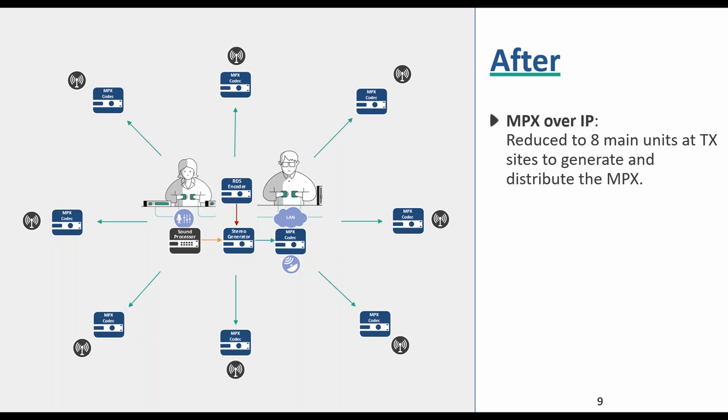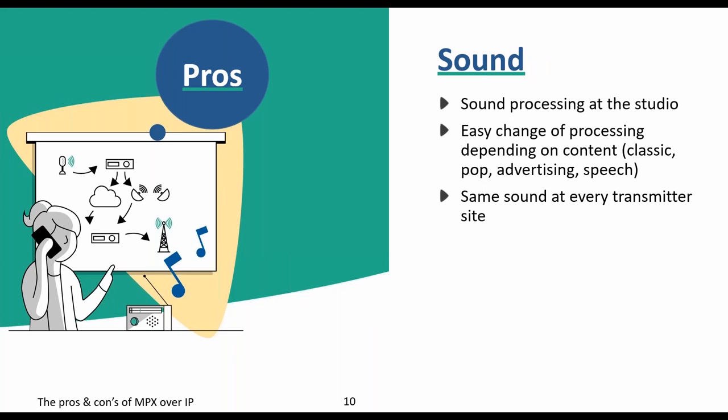Operating an MPX over IP system offers the following benefits: sound processing at the studio, easy and fast changes in sound processing — for example switching between music and speech modes. Your radio station can add specific loudness to each program and advertisement. Dynamic reconfiguration of the sound processor increases listener satisfaction, bringing more listeners to your program and attracting more advertisers. This dynamic sound processing brings added value to advertisers and potential extra revenue for the radio station. All transmitters across the network will have the same sound processing, even at the most remote sites.